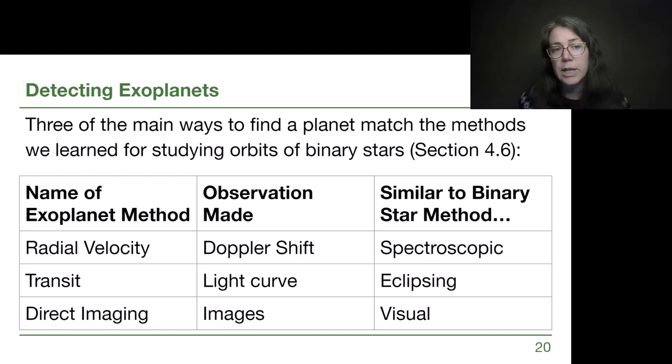And then direct imaging is just taking an image of a system and seeing that secondary object either in infrared or radio. And we won't see an example of that, but we will recognize that there are some observations like that.